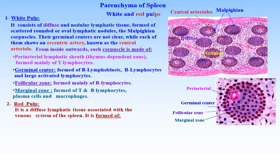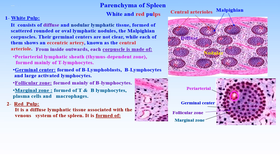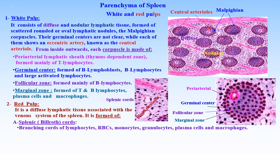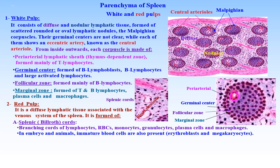Red pulp. It is a diffuse lymphatic tissue associated with the venous system of the spleen. It is formed of splenic cords and blood sinusoids. Splenic cords are branching cords of lymphocytes, RBCs, monocytes, granulocytes, plasma cells, and macrophages. In the embryo and animals, immature blood cells are also present — erythroblasts and megakaryocytes.